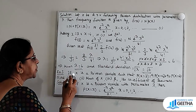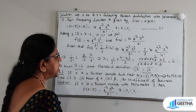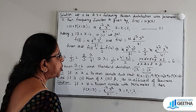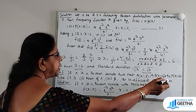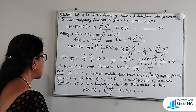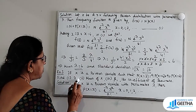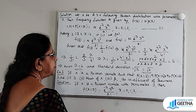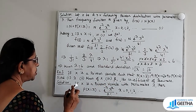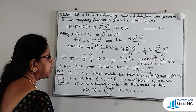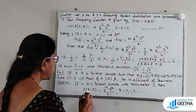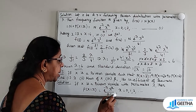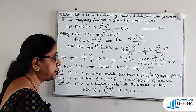Exercise number 3. If x is a Poisson variate such that P(X=2) = 9·P(X=4) + 90·P(X=6), find: (1) lambda, (2) mean of x, (3) beta 1, the coefficient of skewness. x is a Poisson variate with parameter lambda, where P(X=x) = e^(−λ) · λ^x / x!, for x = 0, 1, 2, etc.